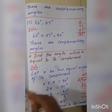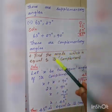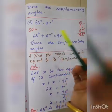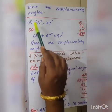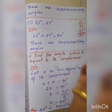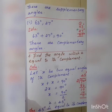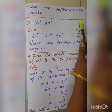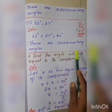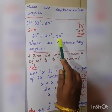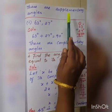The second pair: 63 degrees and 27 degrees. We add them. 63 plus 27 equals 90 degrees — 3 plus 7 is 10, carry 1, 1 plus 6 is 7, 7 plus 2 is 9 — so 90 degrees. Therefore, 63 and 27 are complementary angles because their sum is 90 degrees.